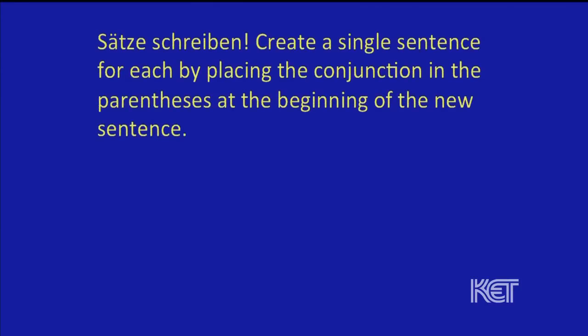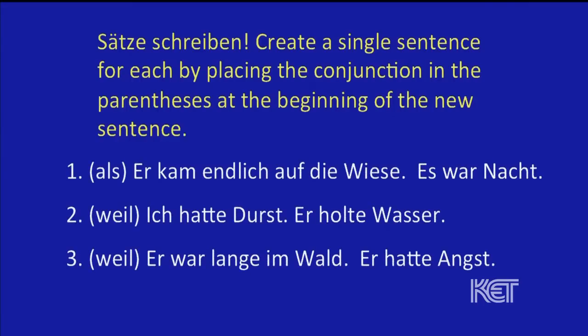Okay, sounds good. Thanks, Simona. And now we're going to go to the Aufgabe. For this, you need to write sentences — Sätze schreiben. Create a single sentence for each by placing the conjunction in the parentheses at the beginning of the new sentence. Here we go — eins, zwei, und drei. Students are going to begin all of these sentences with what's in the parentheses. What's going to go in the middle of each sentence? A comma. That's right. Make sure you have a comma in your sentence, and think of word order — in the final sentence, the verb will be in second position.